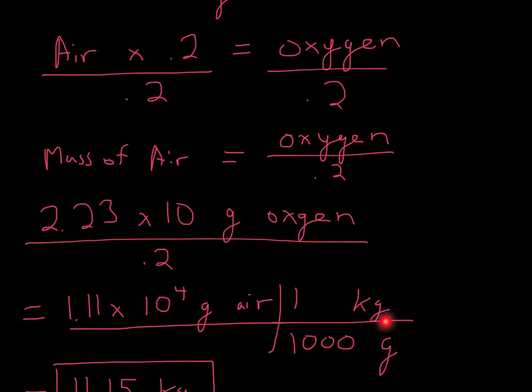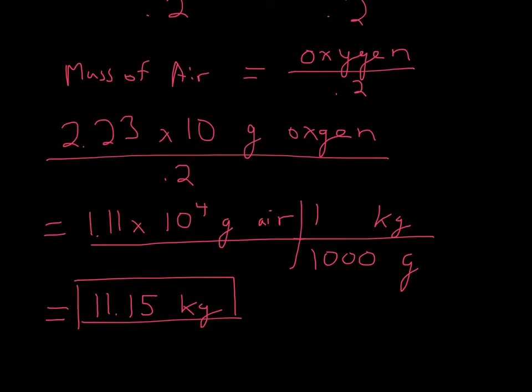So we do dimensional analysis. Since these two are diagonal and they have the same units, the units cancel. This is the conversion: 1 kilogram over 1,000 grams. And so, therefore, we'll be left with kilograms. Your final answer is 11.15 kilograms.